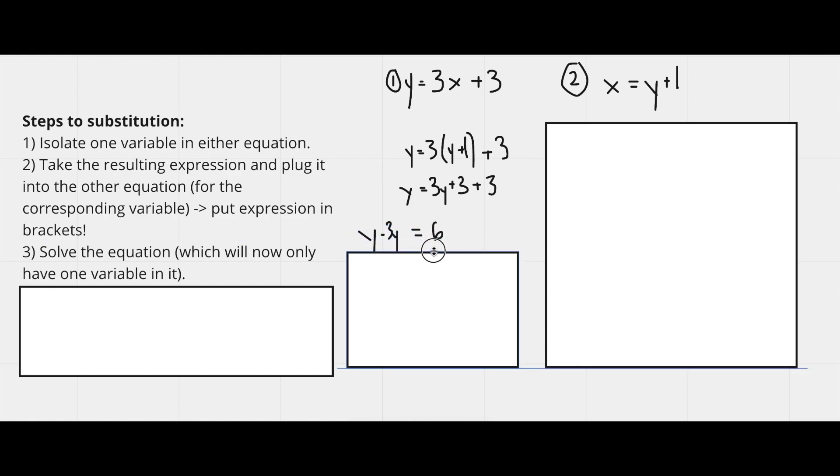Now I rearrange, so I move my variable term to the left. That leaves me with y minus 3y. And on the right, I've just simplified the 3 plus 3, and that gives me 6.